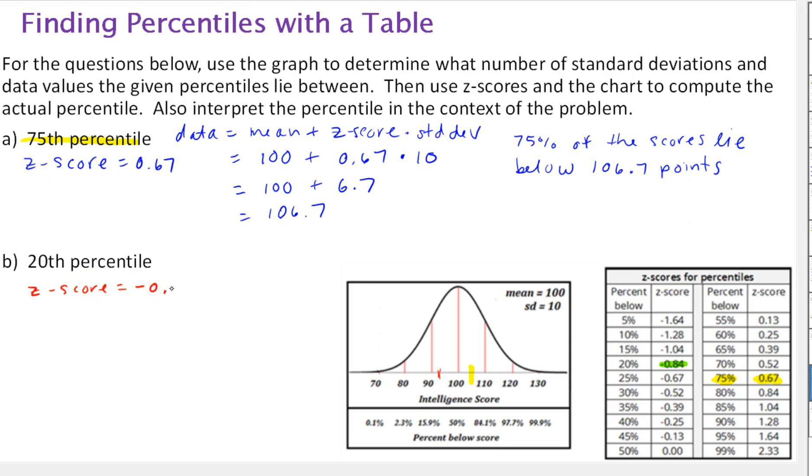Negative 0.84. And to find the data value we take the mean which is 100 plus the z-score negative 0.84 times 10. Again I'll do this by hand so this would be negative 8.4 and that's the same as subtracting. I'll just write that so we have it there and what would that give us 91.6.